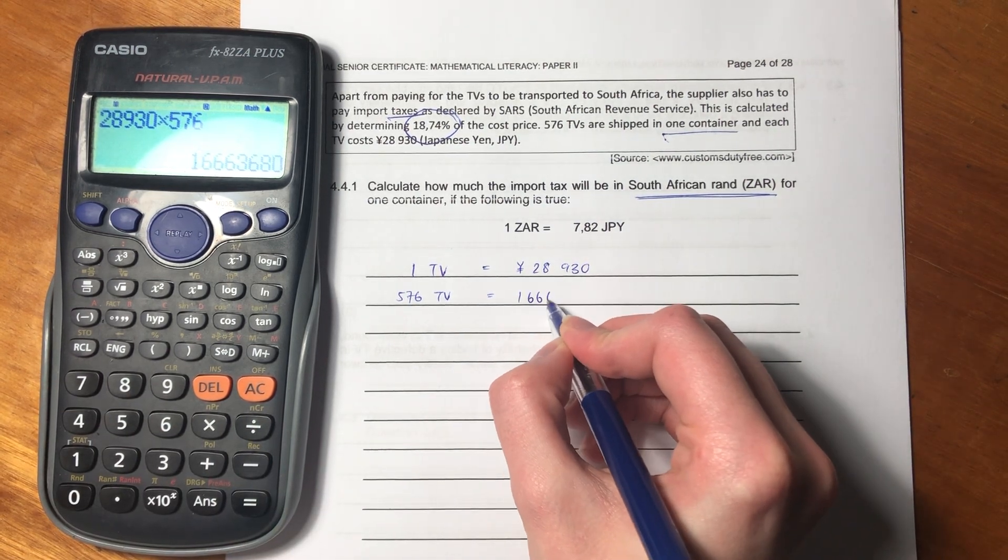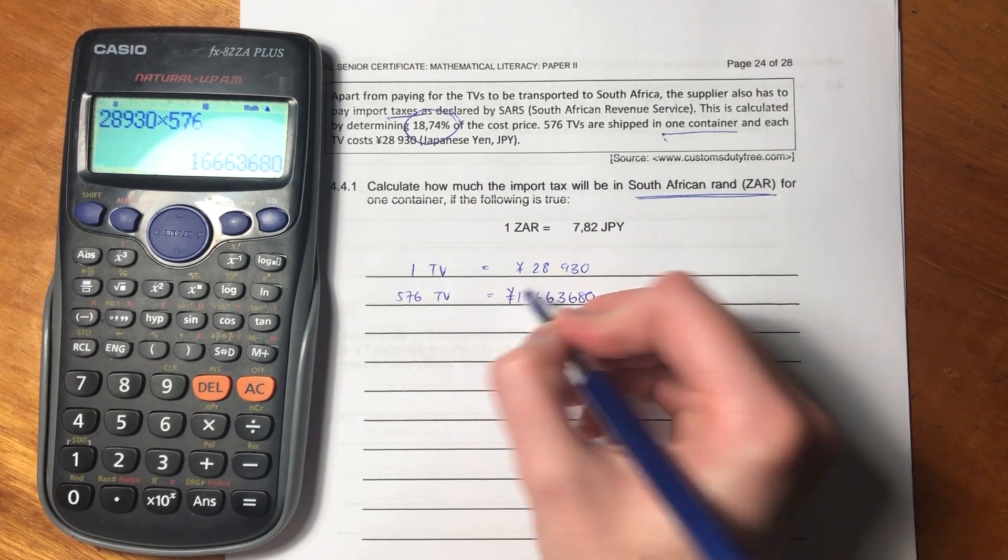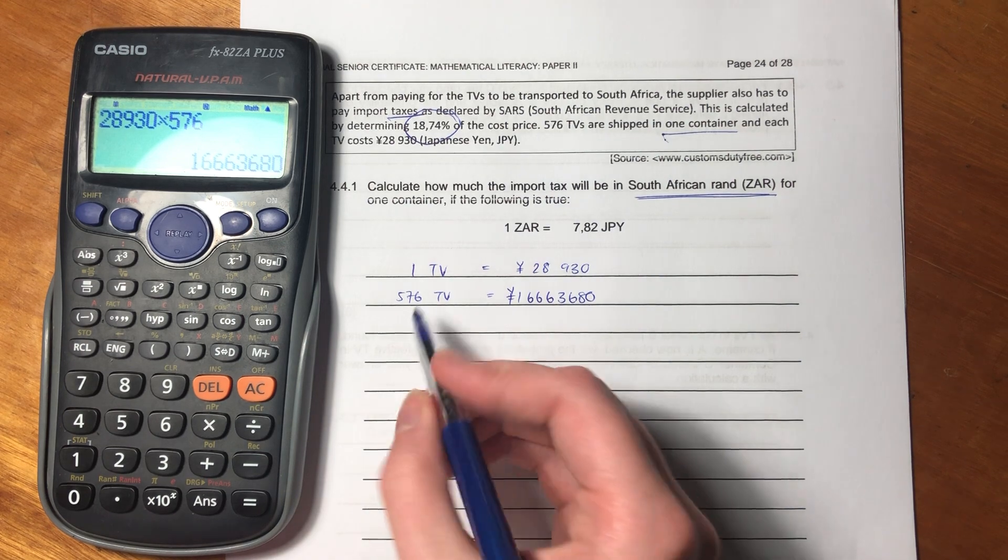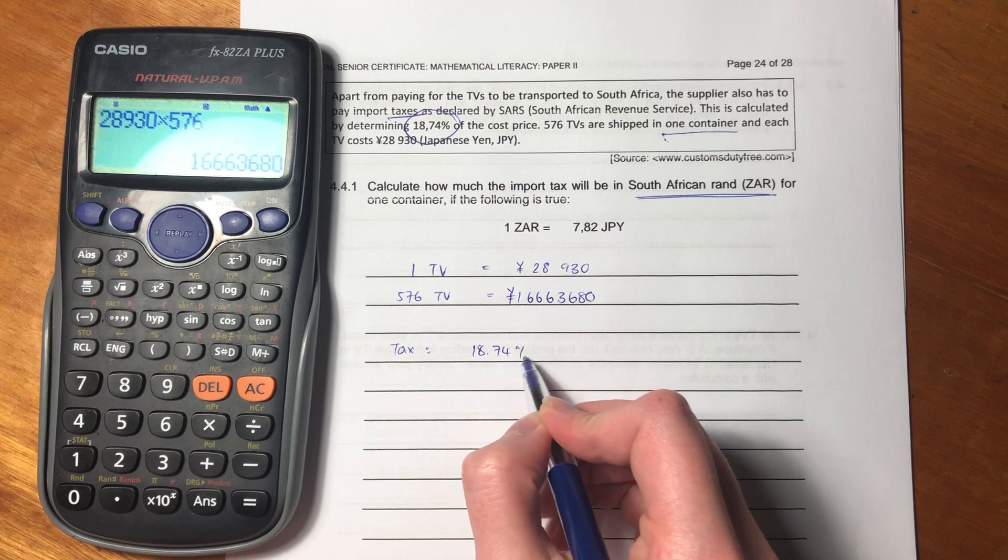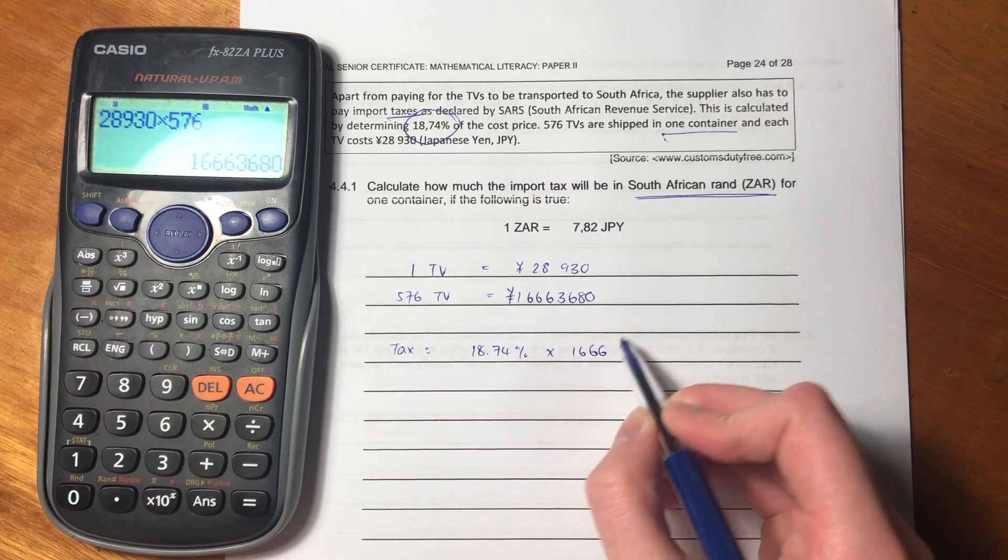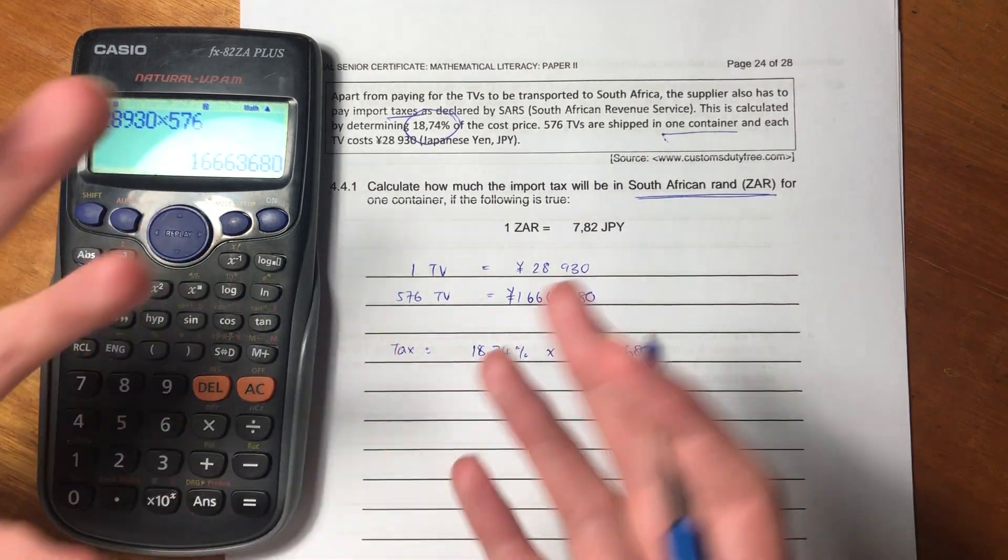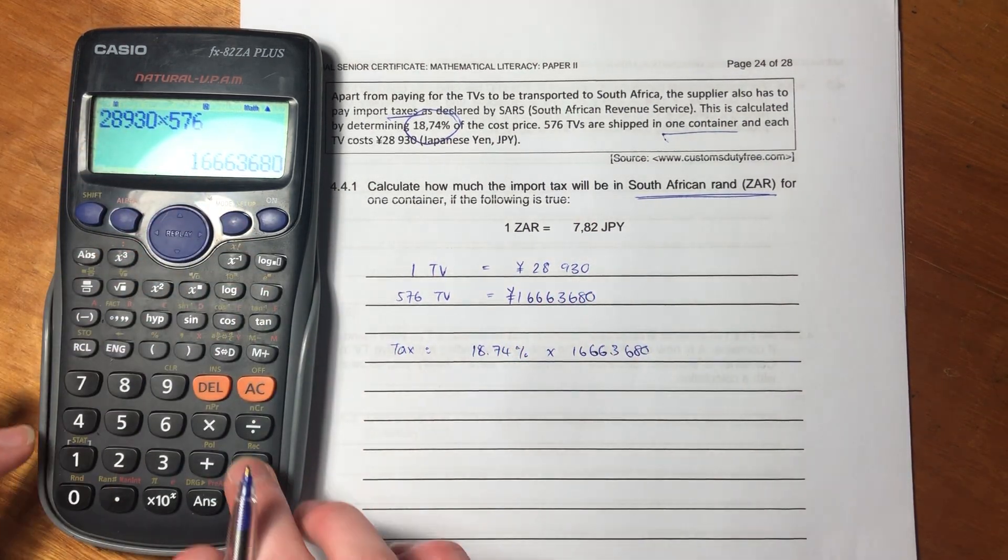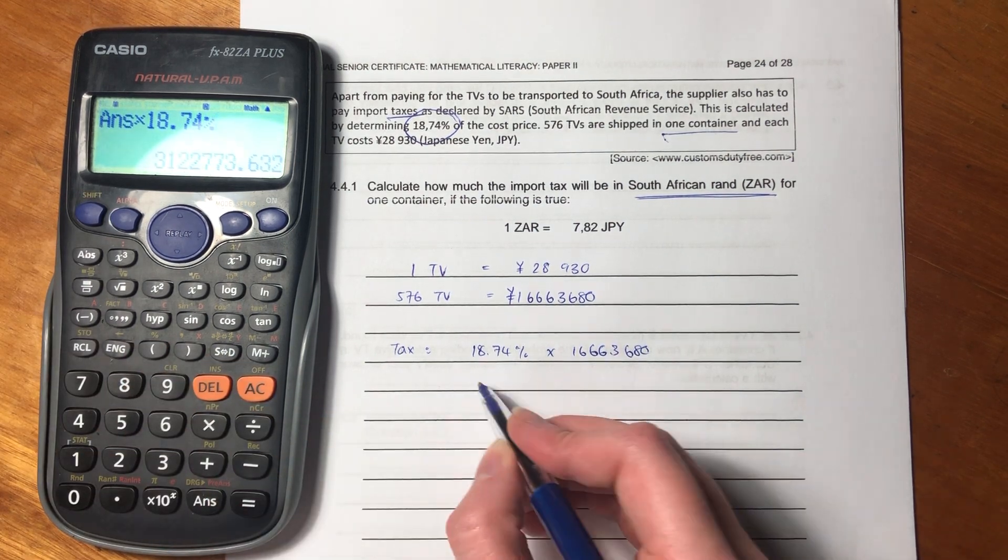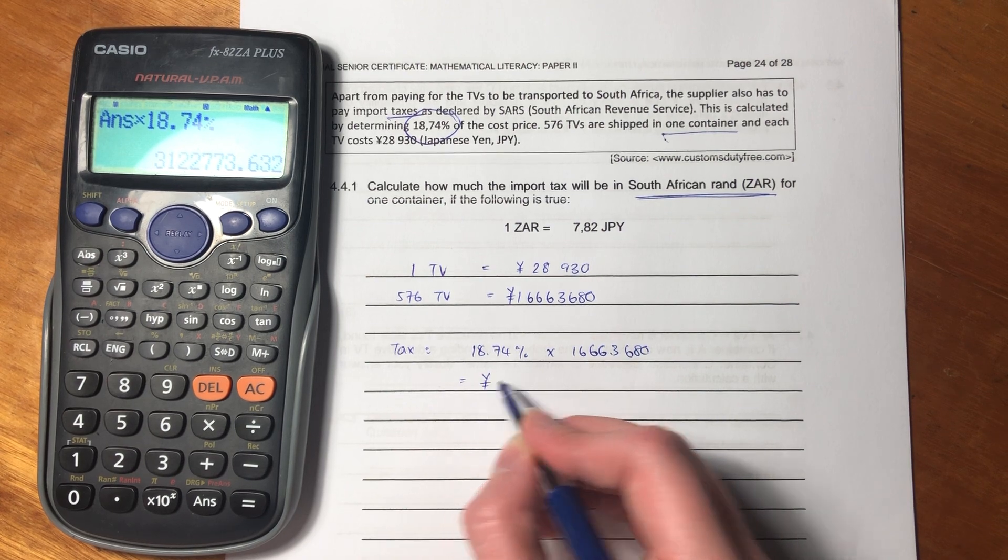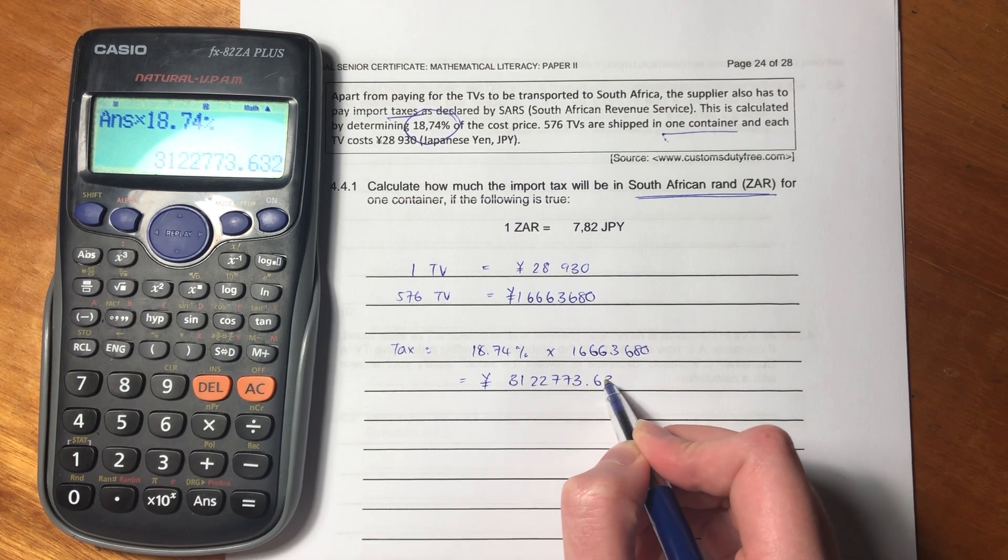So this is how much we are looking at in yen for all those TVs. But then the tax that we pay on that is 18.74% times by the amount of money it costs to have all those TVs, to purchase or to make all those TVs in that container. So we just put that into our calculator. And this is how much tax we would pay if we were paying in yen.